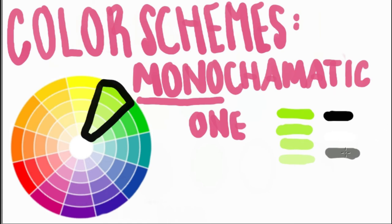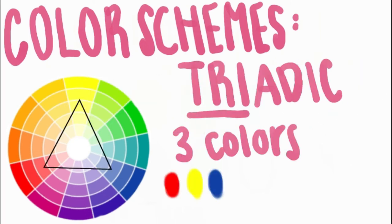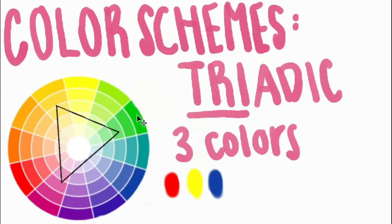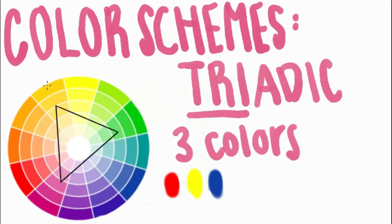A triadic scheme is three colors that are evenly spaced out to form a triangle. I am moving this triangle around so that I can make a color scheme. This color scheme is actually really pretty, honestly.